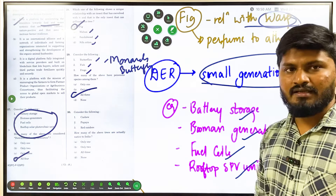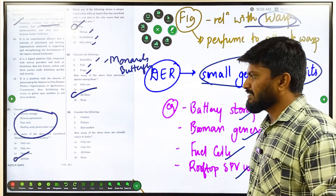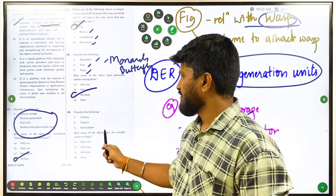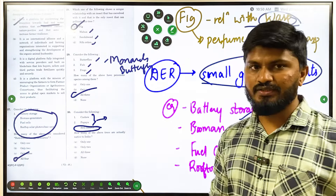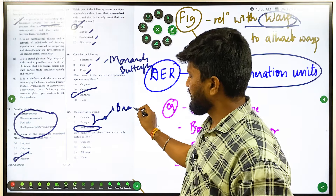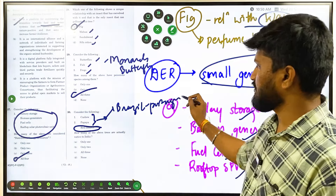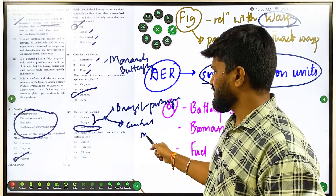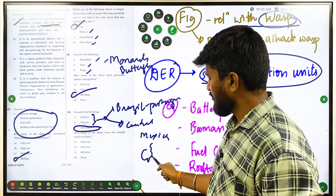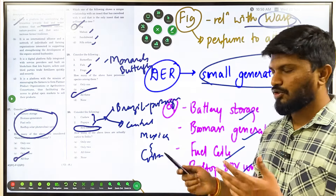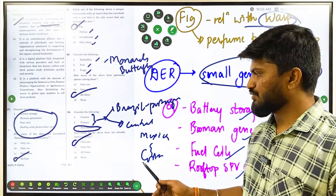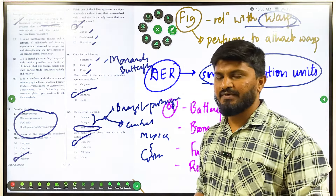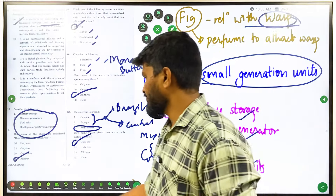Question 30 asks: among cashew, papaya, and red sanders, how many trees are native to India? The correct answer is only one — red sanders. Cashew belongs to Brazil and was introduced to India by the Portuguese, who ruled both Brazil and India. Papaya belongs to Central America — Mexico and Costa Rica — and was brought to India by the British. You can use your history knowledge here: Portuguese introduced cashew and other crops to India.